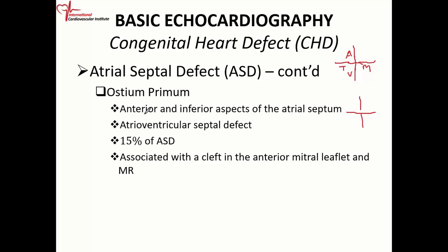With the ostium primum defect, the anterior inferior aspect of the atrial septum didn't fuse — it's an atrioventricular septal defect. It accounts for about 15% of atrial septal defects; the most common type remains the ostium secundum. Because of how it forms, it is associated with a cleft in the anterior mitral leaflet, and the patients usually have mitral regurgitation.